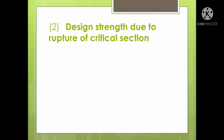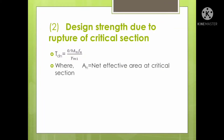The second design strength is due to rupture of the critical section. This is given by TDN = 0.9 × AN × FU / γM1, where AN is the net effective area at the critical section, given by a detailed equation.